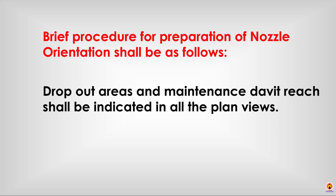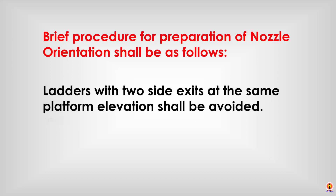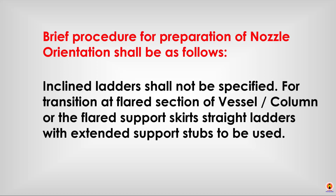Dropout areas for maintenance shall be indicated in all plan views. For all vertical vessels and columns, platform extent shall preferably be restricted to 180 degrees. Ladders with two-sided exits at the same platform elevation shall be avoided. Inclined ladders shall not be specified for transition at flat sections of vessel columns or flat support skirts.